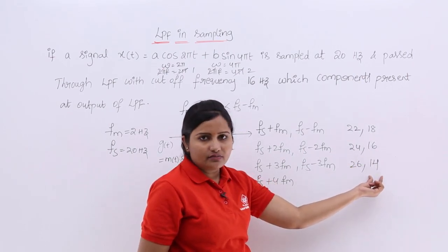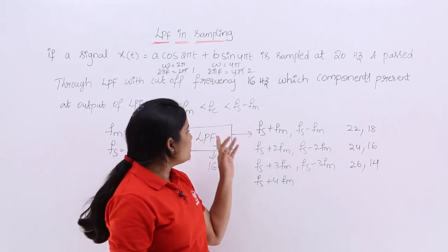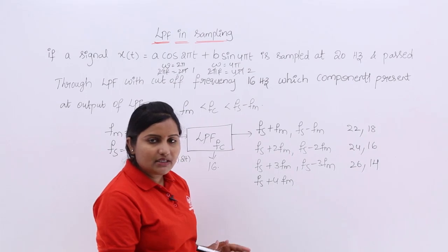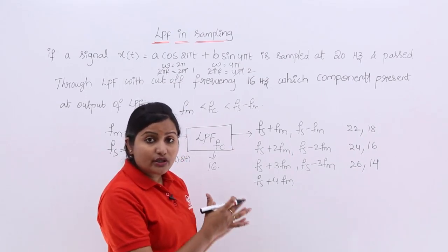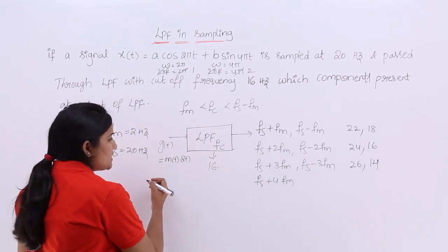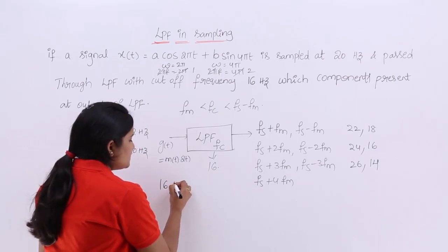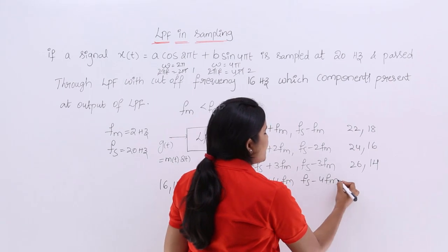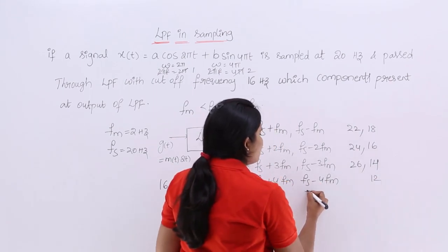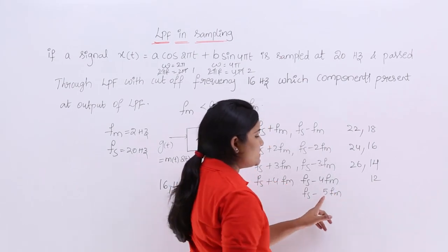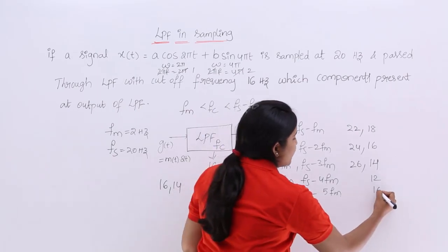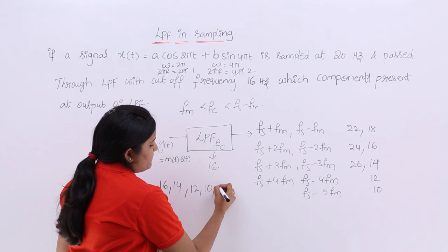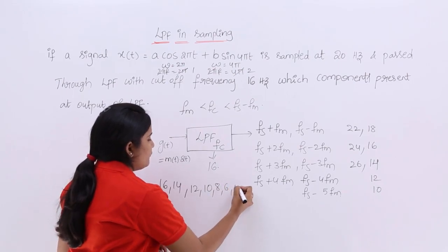From 16 Hz and below, you will get the frequency components. LPF means low pass filter — frequencies lower than or equal to 16 Hz are passed; frequencies higher than 16 Hz are going to be opposed by this filter. So the frequencies present at the output of the filter are 16 Hz, 14 Hz. Continuing: FS − 4FM = 20 − 8 = 12 Hz. Decrementing further: 10, 8, 6, 4, 2 Hz.